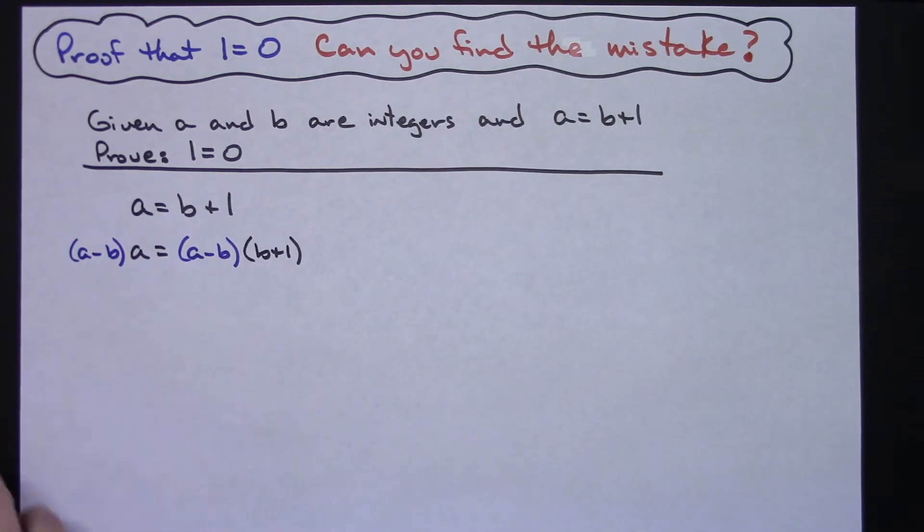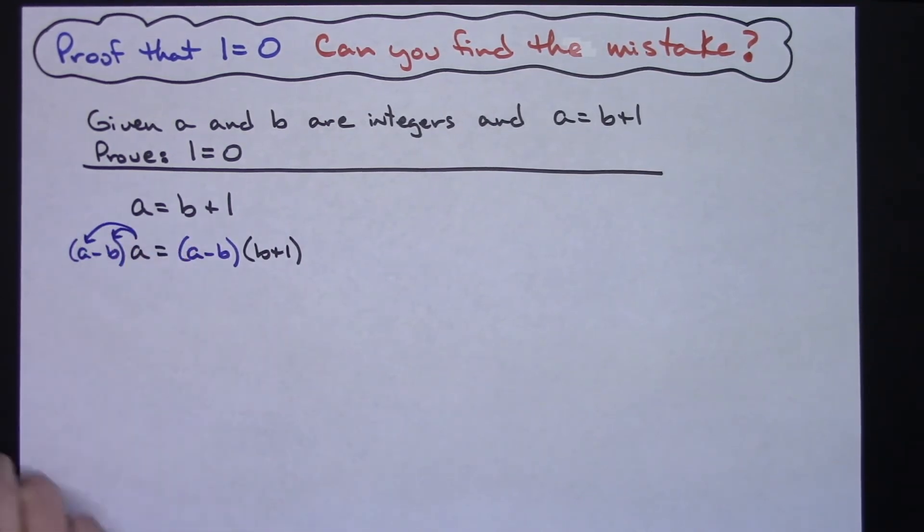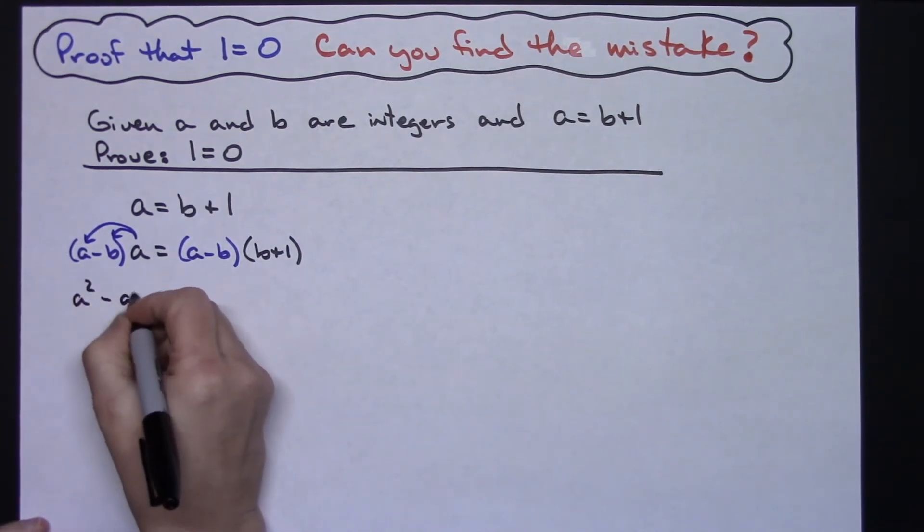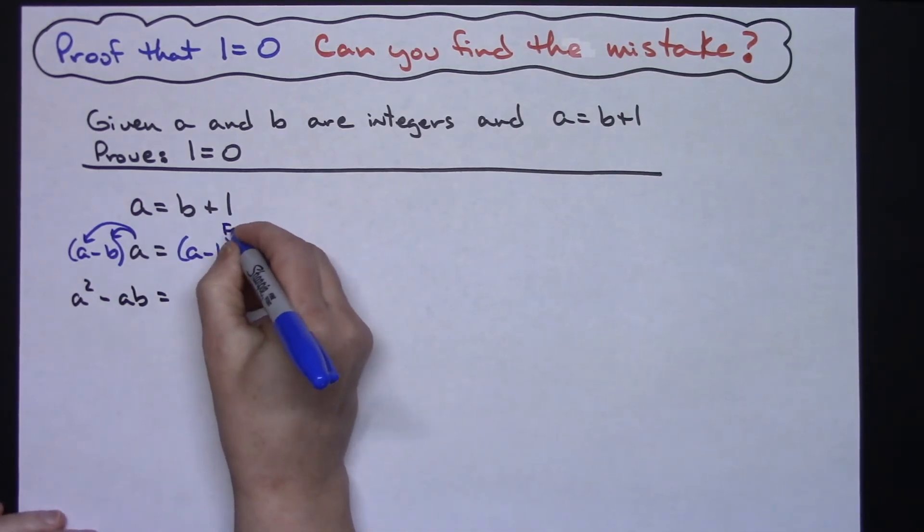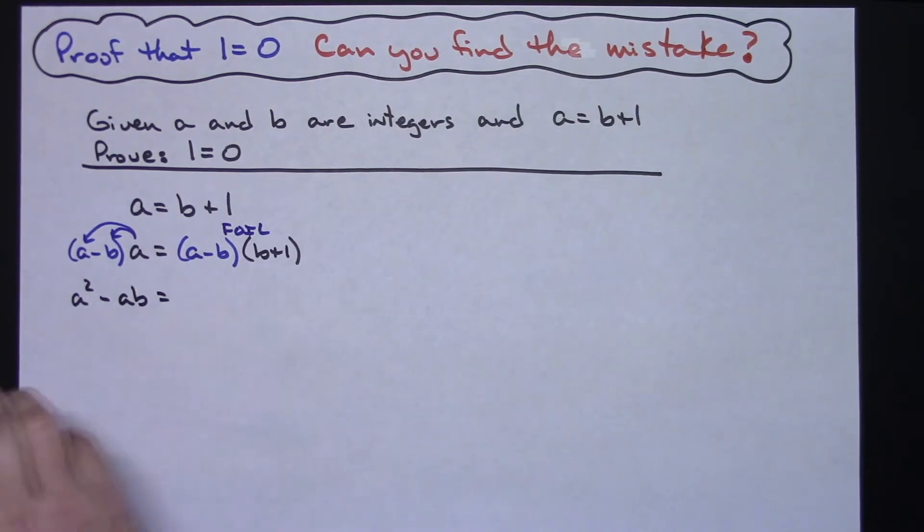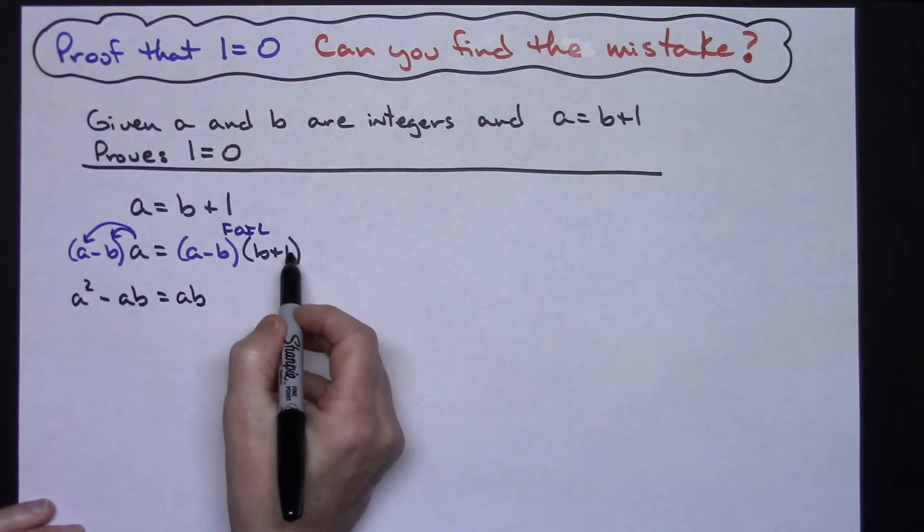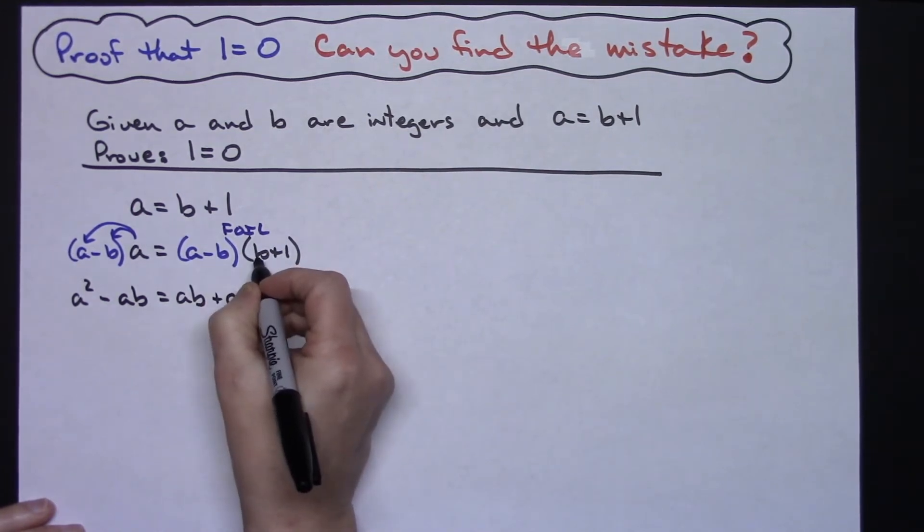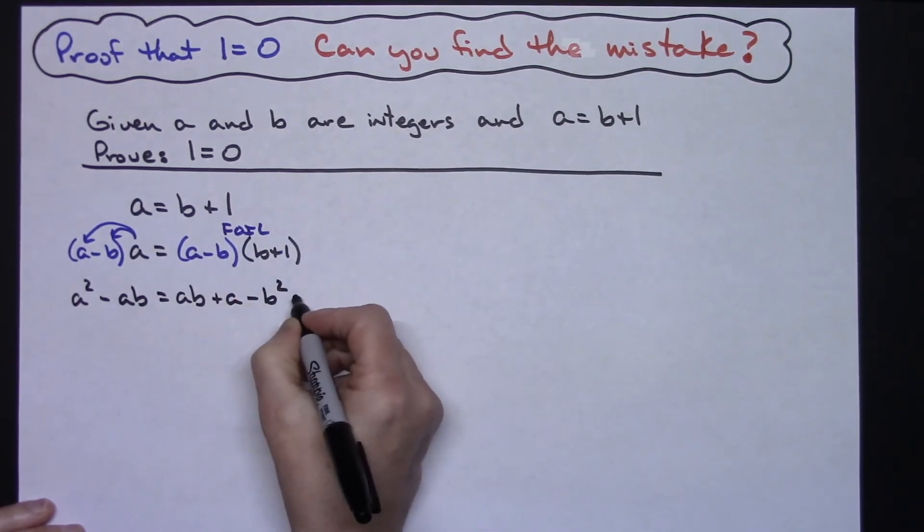Now on this left hand side here I'm going to choose to distribute the a, so I'm going to have an a squared minus ab. On this right hand side I'm going to FOIL, which is a pretty common algebra one skill here. So a times b is just going to be ab, and then outside terms is going to be plus a, inside terms is going to be minus b squared, and the last terms is going to be minus b.